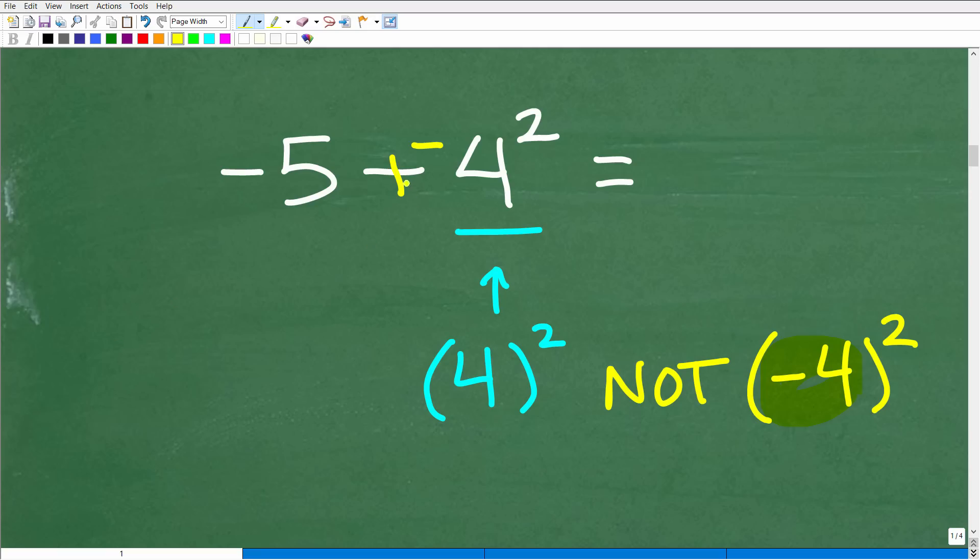And it's easy to see that, right? Because I could look at this problem as negative five minus four squared or plus negative four squared. Okay? So this right here, this negative four squared, when you're doing PEMDAS, the order of operations, you're not doing this negative. The negative is the opposite of four squared.